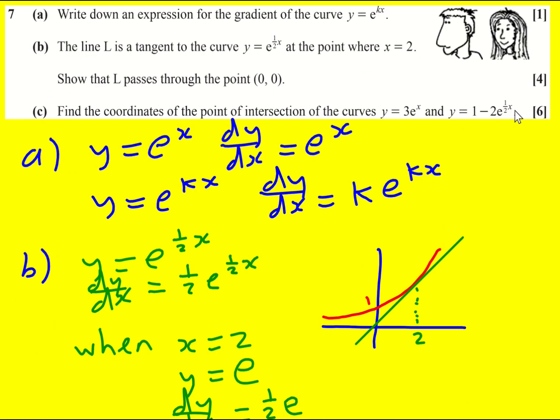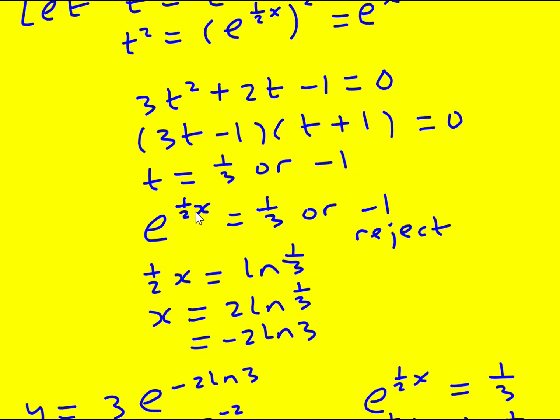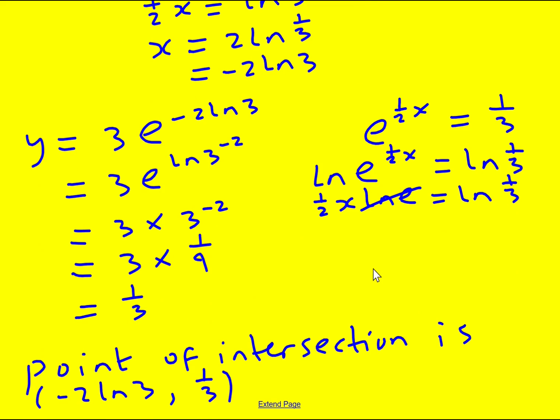Just trying to think, is there any easier way of doing that last bit? I think we could have substituted it into this one. One minus two e to the half x, because we had e to the half x was a third. One minus two times a third would have got me a third a lot quicker. So I kind of chose the wrong one there. I don't regret it. I did it and showed we could do it that way. But do think carefully about which ones to substitute into. There's some more technical details going on here.